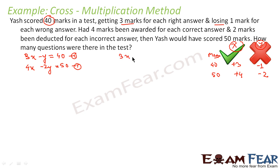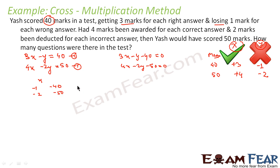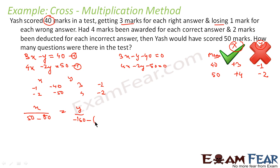In the first case, x correct questions give 3x marks and y incorrect questions subtract y marks, so 3x minus y equals 40. In case two, with 4 marks for correct and minus 2 for wrong, the total is 4x minus 2y equals 50. Writing in standard form: 3x minus y minus 40 equals 0, and 4x minus 2y minus 50 equals 0.